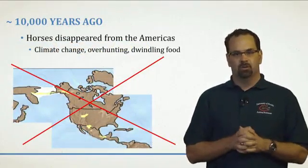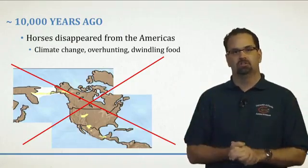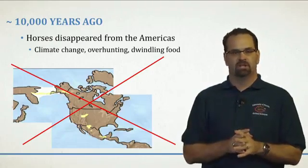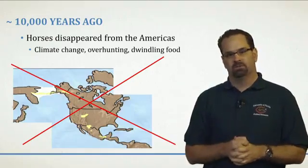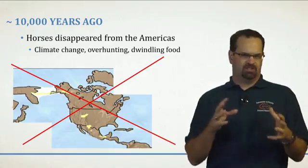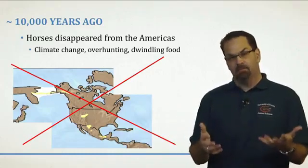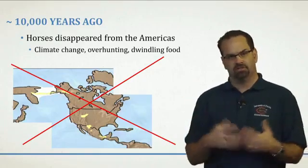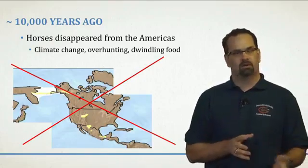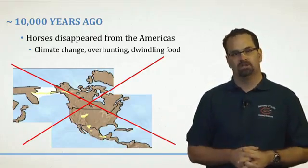About 10,000 years ago, horses completely disappeared from North America, South America, and Central America. This coincides with the dying out of other megafauna such as the mammoth and woolly rhino. It could have been a change in climate combined with some over-hunting, with their food dwindling. Scientists aren't quite clear on what drove them to extinction from the Americas. They didn't come back until the 16th century, the 1500s, when the Spanish conquistadors were venturing through Central, South, and North America and some horses got away — establishing the wild populations we see today.